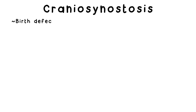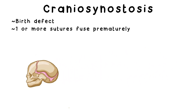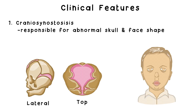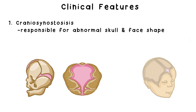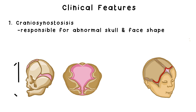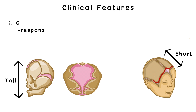Craniosynostosis is a birth defect where one or more sutures fuse prematurely. The skull can't grow any more perpendicular to the suture, so it instead overgrows parallel to it, and the head and face can take on an abnormal shape. Craniosynostosis is what causes the abnormal skull and face shape in Apert Syndrome. Specifically, the coronal sutures, which run more or less along the anterior hairline, fuse early, causing the skull to become tall and short in the front-to-back dimension — a condition called turribrachycephaly.